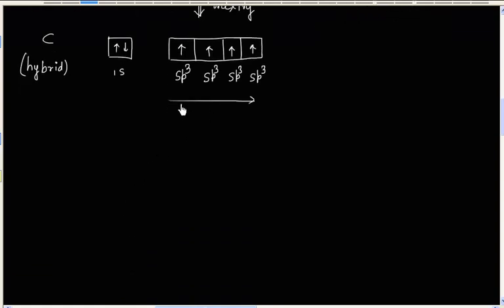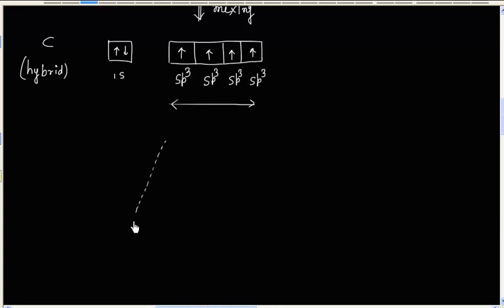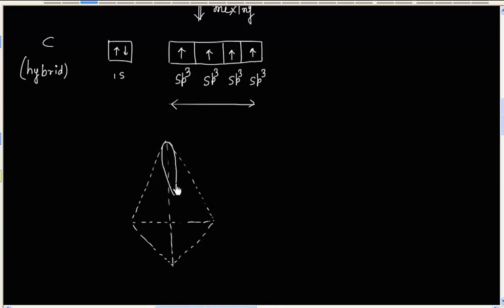Now these 4 orbitals in space will lie in such a way that the repulsion between them is minimum. And that can be done only if I place these hybrid orbitals along the vertices of a tetrahedron. So we have 4 sp3 atomic orbitals oriented along the tetrahedral vertices, and this means the bond angle is 109 degrees.